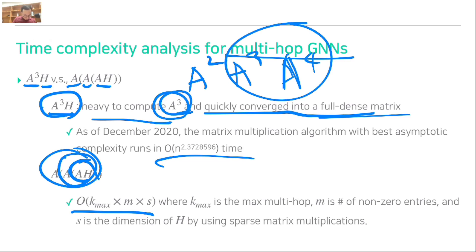Let's compare two different cases. When we proceed with this, it is heavy to compute this and it quickly converges into a full dense matrix. It is very time-consuming. When we compute from this direction, it is more efficient in time complexity. It corresponds to O(K_max × M × S), where K_max is the maximum multi-hop, M is the number of non-zero entries, and S is the dimension of H. When we use sparse matrix multiplication, it is very efficient, but in the other case it's difficult to use sparse matrix multiplication because A^3 is already a very dense matrix.